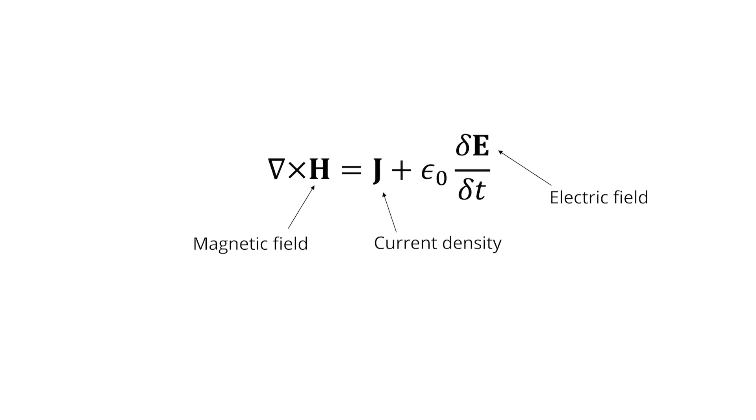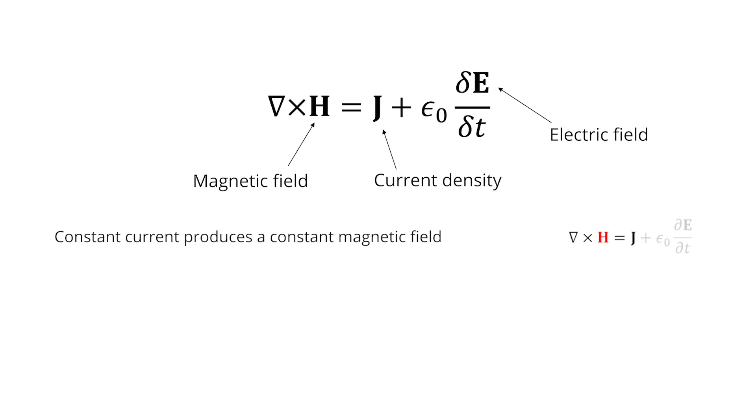I want to describe three different situations. The first situation is when you have a constant flow of current through a wire. In this situation, you will generate a constant magnetic field, but because of the time derivative in the equation, you're not going to generate an electric field along with it.